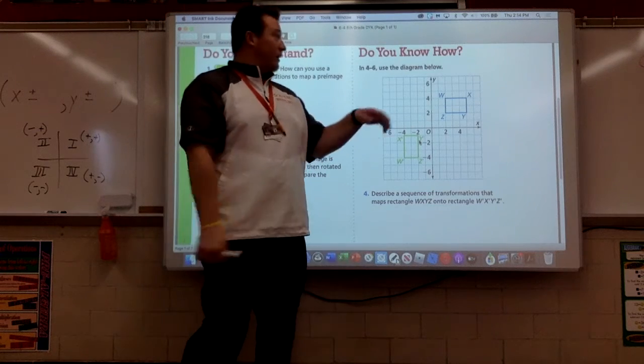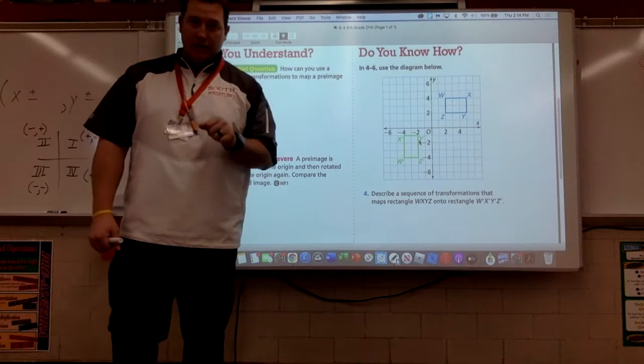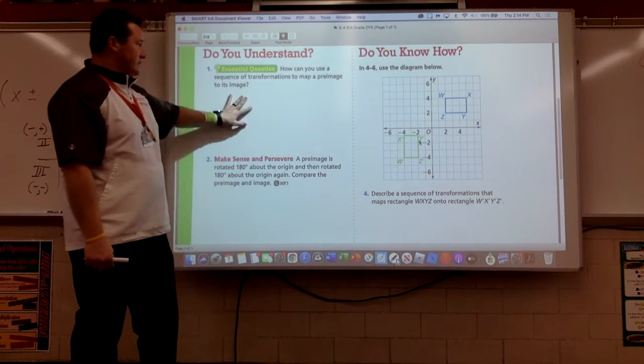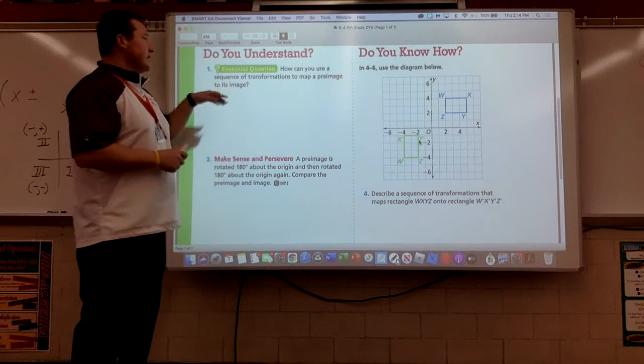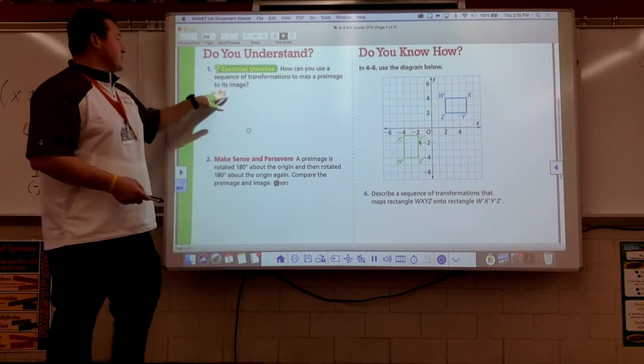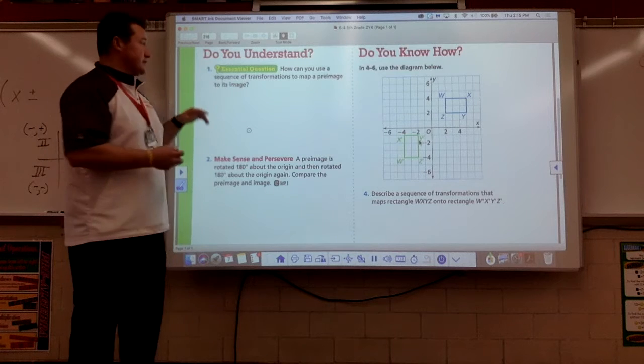Friends, I hope you are doing well. Here we are on page 318 in your fantastic, glorious workbook. We're going to be doing some multiple transformations. First question here leads us right into everything we've been trying to do. How can you use a sequence of transformations to map a pre-image to its image?